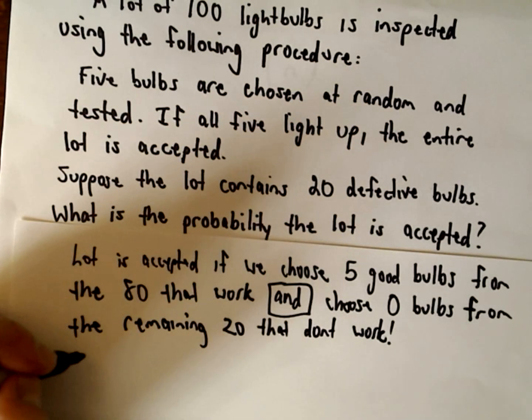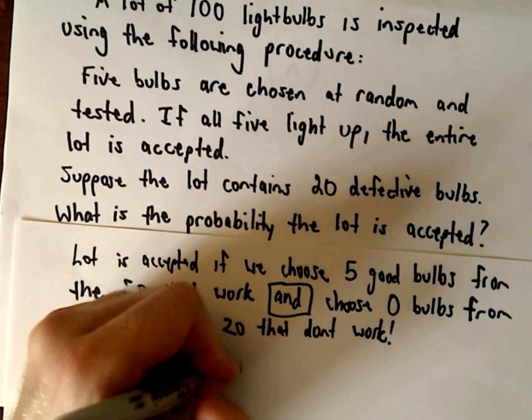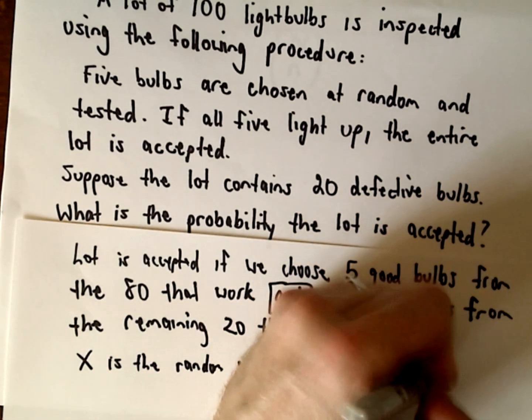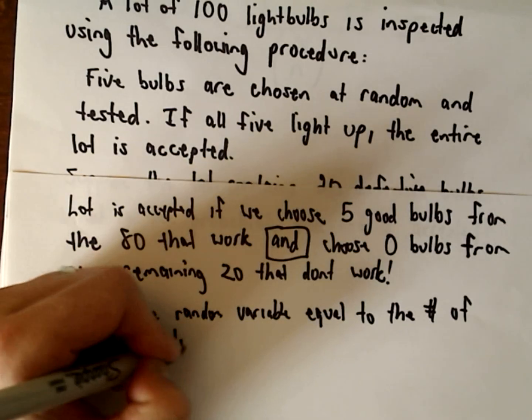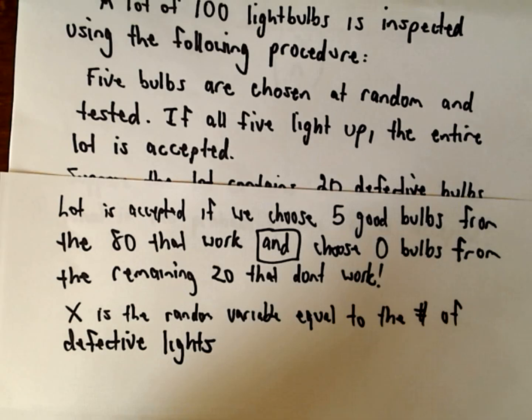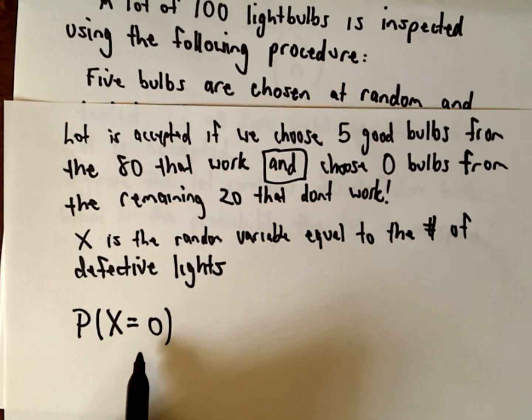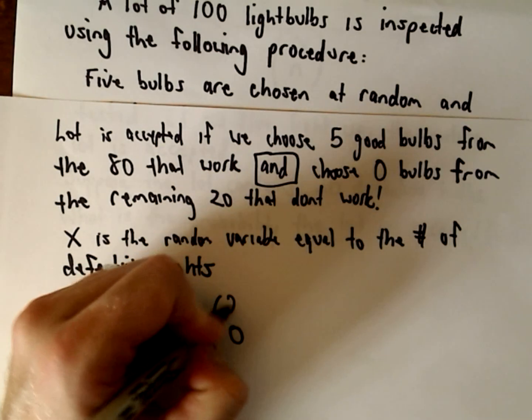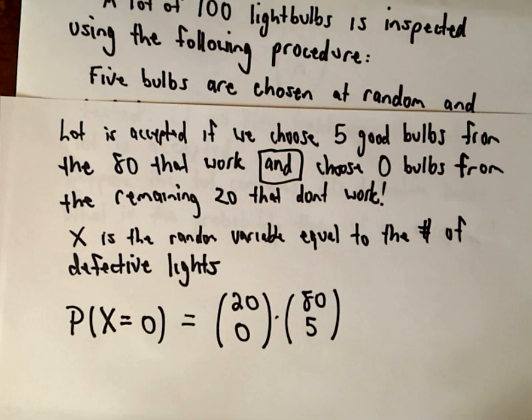Let's suppose that capital X is the random variable equal to the number of defective lights. So x is going to be the random variable equal to the number of defective lights. We're trying to figure out the probability that capital X equals zero, the probability of zero defective lights, which means that our lot is going to be accepted.